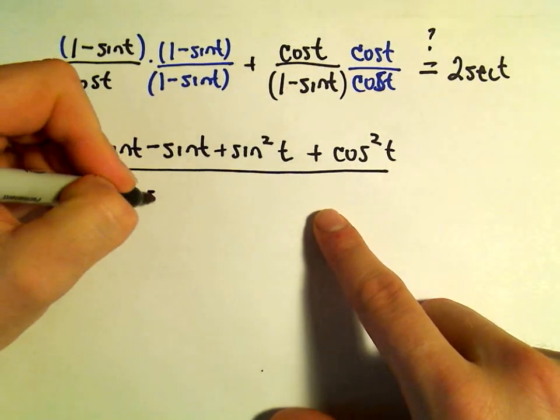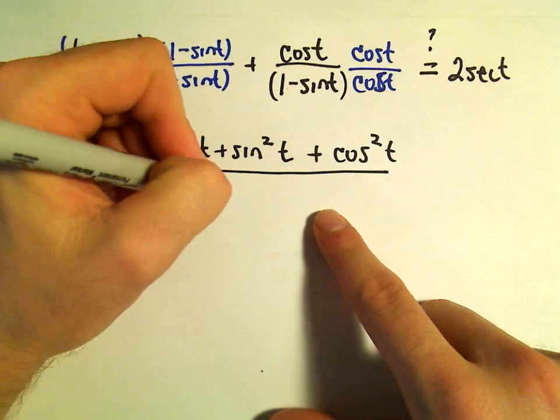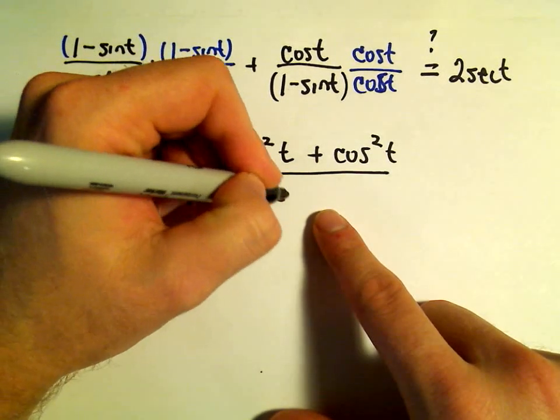In the denominator we have our common denominator of cosine t times 1 minus sine t.